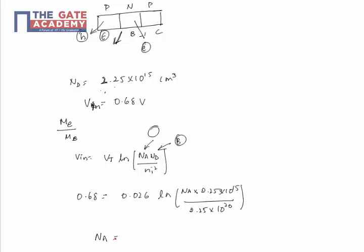we will get the value of acceptor concentration in emitter equal to 2.283 × 10^16 per centimeter cube.